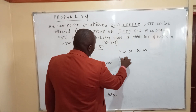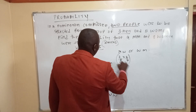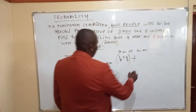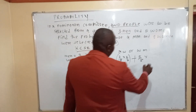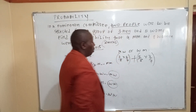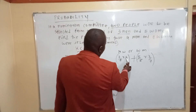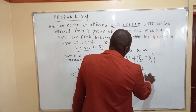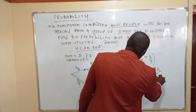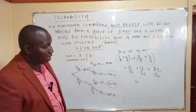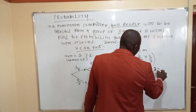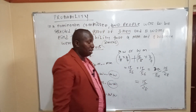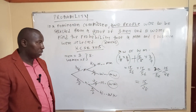Take the man-woman branch: 3 over 8 times 5 over 7 gives 15 over 56. For the woman-man branch: 5 over 8 times 3 over 7 also gives 15 over 56. Adding them: 15 over 56 plus 15 over 56 equals 30 over 56. Simplifying by 2 gives 15 over 28.